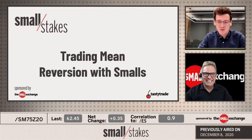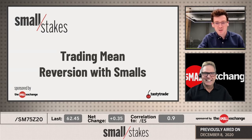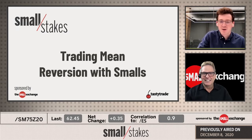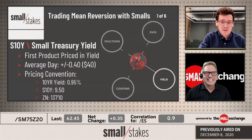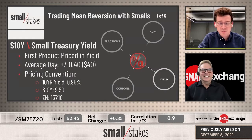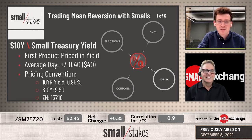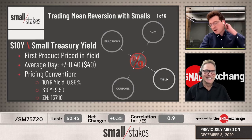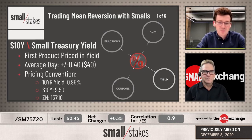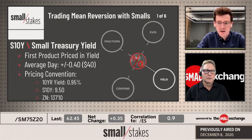Today we're talking trading mean reversion with small exchange products, using the most recent product added to the suite: Small Treasury Yield, S10Y, as the primary example. It's a futures product that moves about 40 cents, or $40 per day, with a margin of under $200 — could be a little bit north of that depending on your broker.